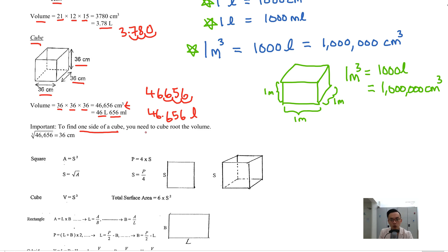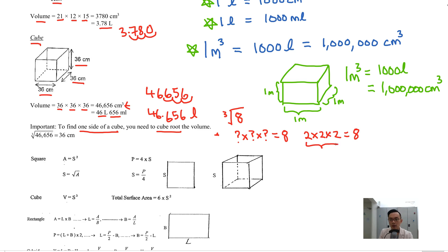If you want to find one side of a cube, you need to cube root the volume. Cube root basically means you take a number — let's say 8 — and find what number times itself three times equals 8. The answer is 2, because 2 times 2 times 2 equals 8. So 2 is the cube root of 8. Therefore, to find one side of a cube, you cube root the volume, because it's length times breadth times height that gives you the volume.